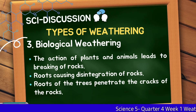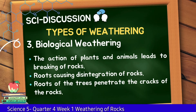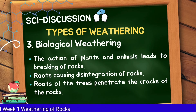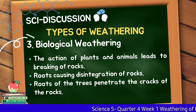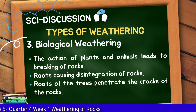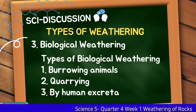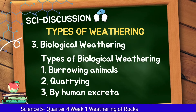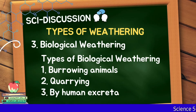Biological weathering: The action of plants and animals leads to the breaking of rocks. Roots causing disintegration — the roots of trees penetrate the cracks of the rocks. Types of biological weathering: First, burrowing animals such as rats, earthworms, ants, and rabbits cause a lot of weathering.